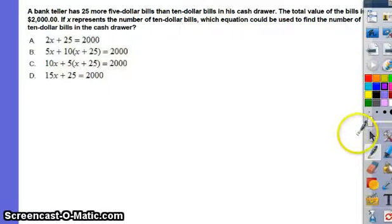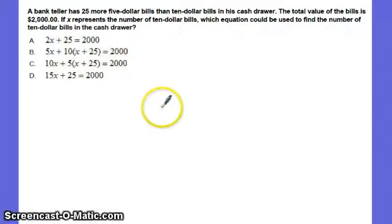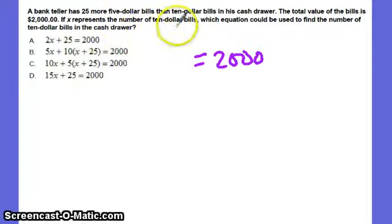A bank teller has 25 more $5 bills than $10 bills in his cash drawer. The total value of the bills is $2,000, so we know it's going to equal $2,000. That doesn't help us rule any of these answers out. If X represents the number of tens, which equation could be used to find the number of $10 bills in the cash drawer.